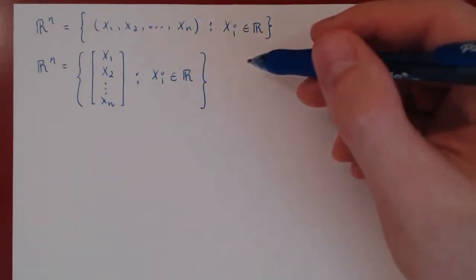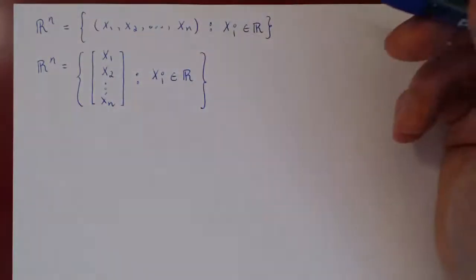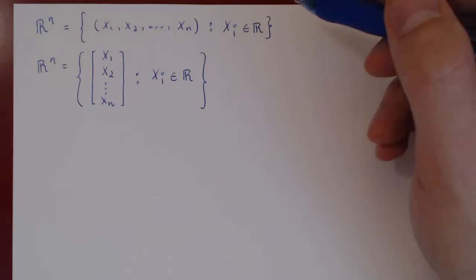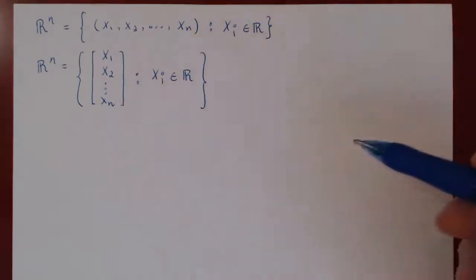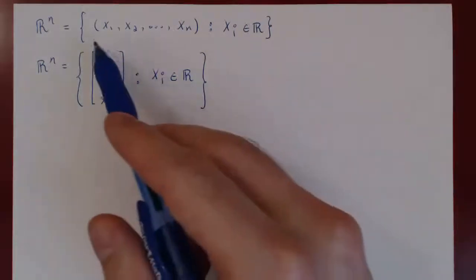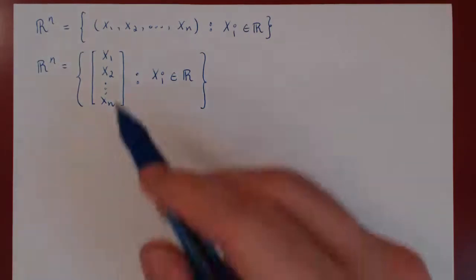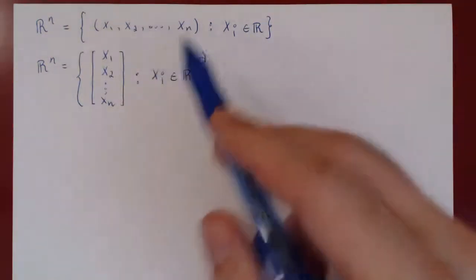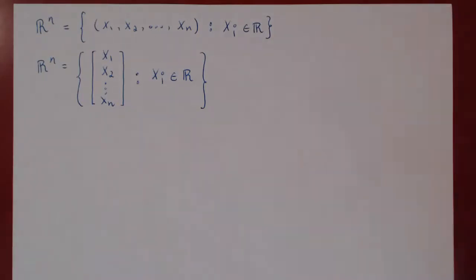But we still have the dot product. We can still dot two vectors in Rⁿ by multiplying corresponding entries and adding them up. The question is: with the help of the dot product, can we carry over the geometry developed in R² and R³ to Rⁿ? Because the algebra works exactly the same — you add vectors by adding corresponding entries, you multiply by a scalar by multiplying each entry. So algebraically nothing changes, whether you're in R², R³, R⁴, or beyond.